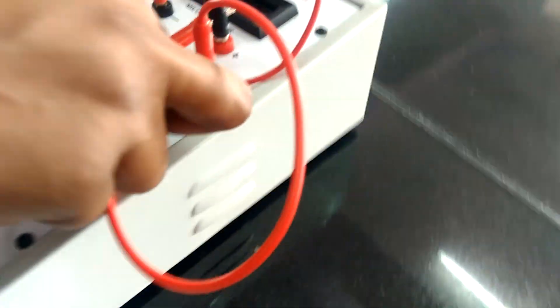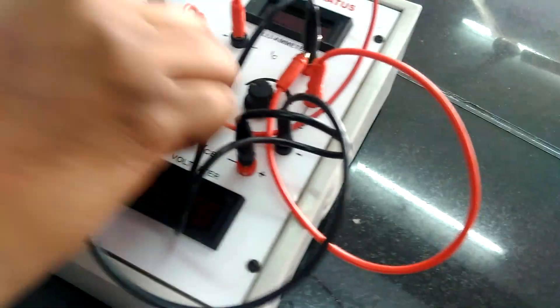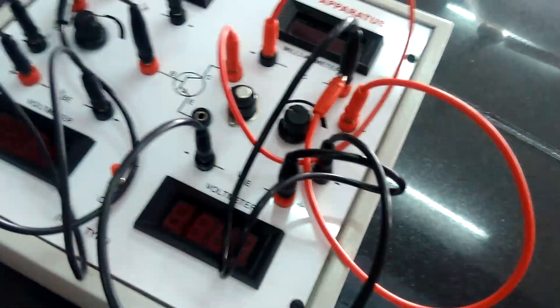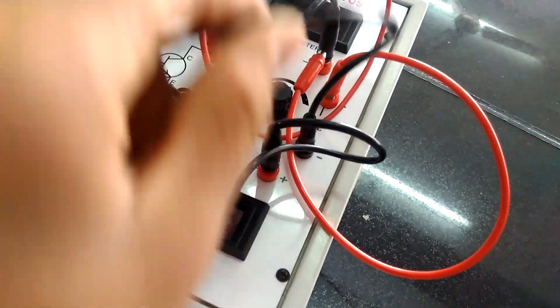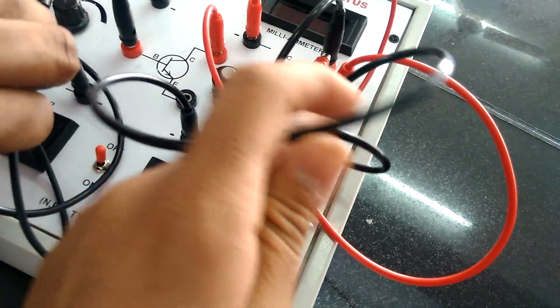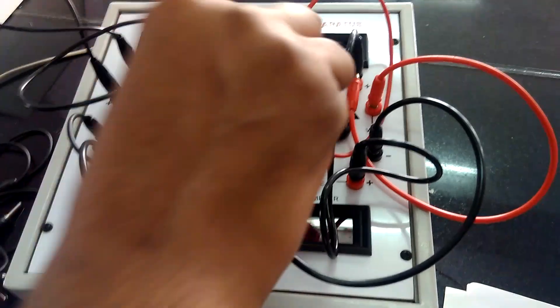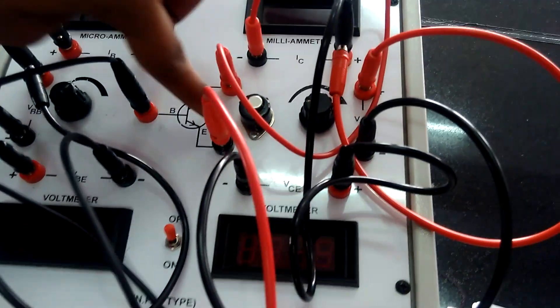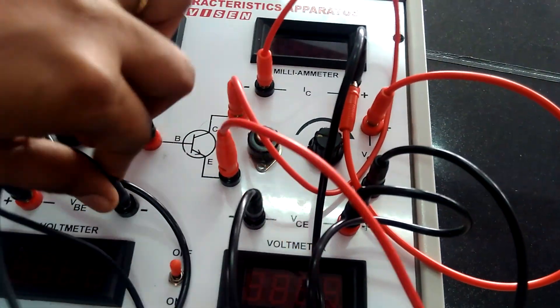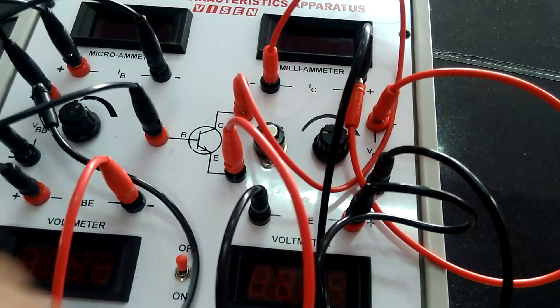Then negative of VCC is joined to the negative of VCE and take another wire and join negative of VBE to the negative of VBE.